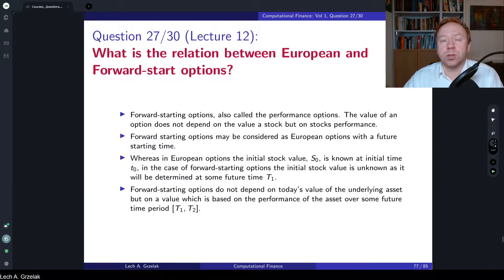Hello everyone, welcome to questions and answers based on a course of computational finance. Today we have question number 27. This question is based on materials discussed in lecture number 12. The question of today is: what is the relation between European and forward-start options?